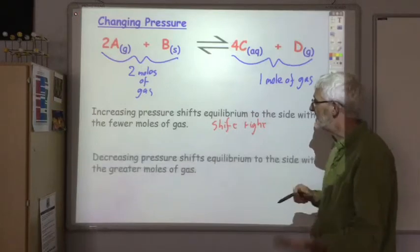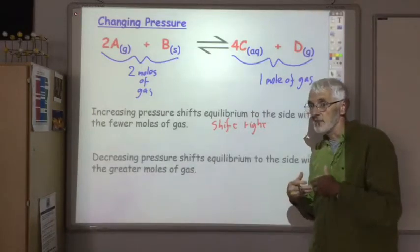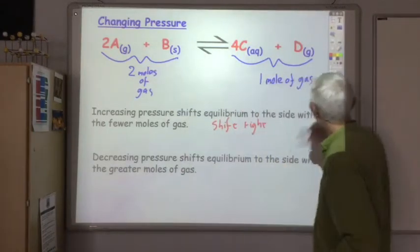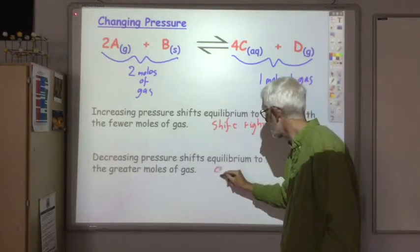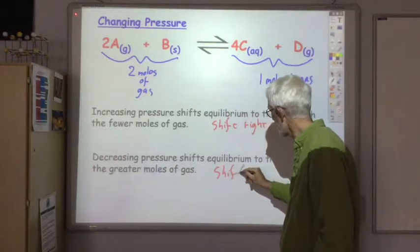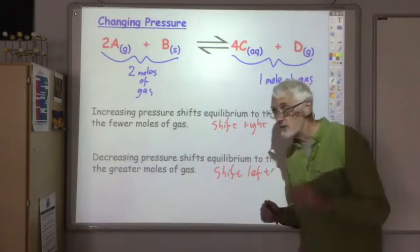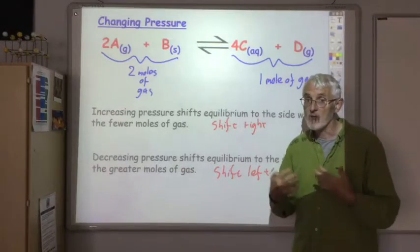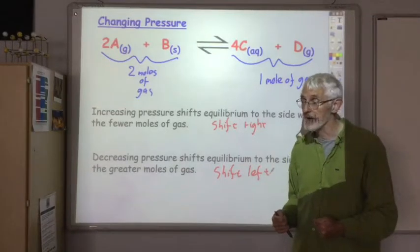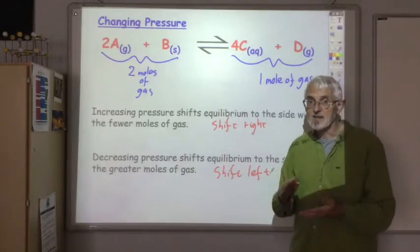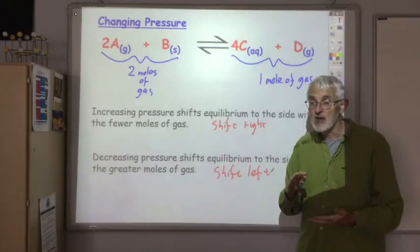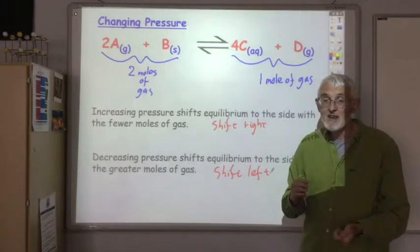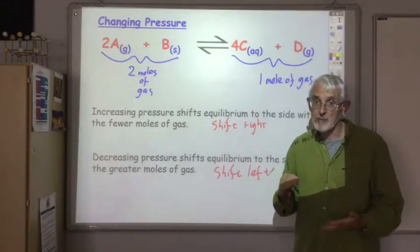And the opposite, if we decrease the pressure, the system tries to increase the pressure again, so it shifts to the side with more moles of gas. So it would shift to the left. Two things worth noting, if you've got the same number of moles of gas on both sides of the equation, changing the pressure will have no effect on the position of equilibrium. And also, if a gas is involved, equilibrium will only be reached if it's carried out in a sealed container. If it's an open container, then you're continually losing the gas and equilibrium would never be reached.